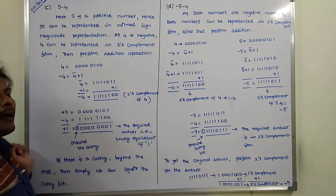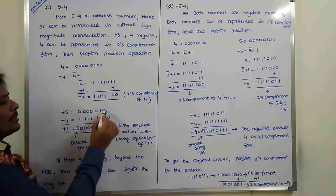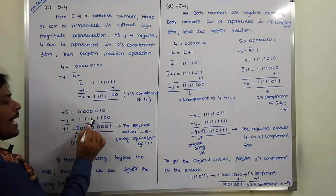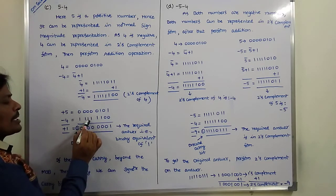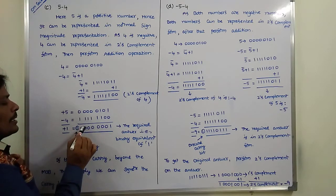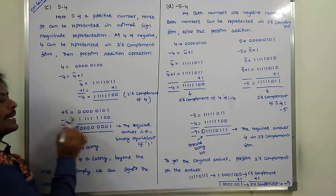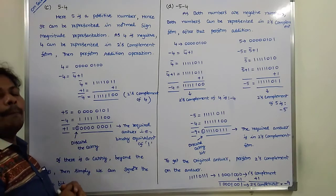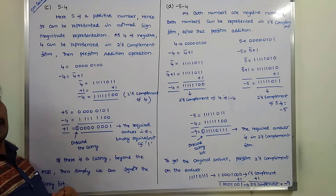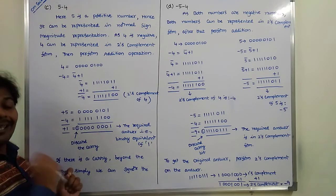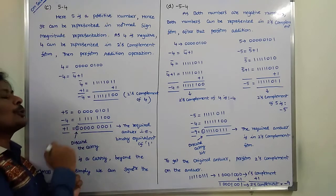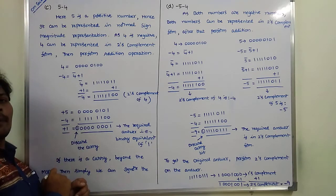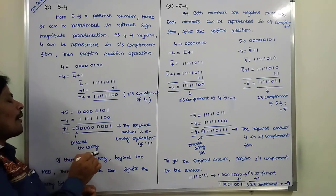Now we perform the addition operation. 1 plus 0 is 1; 0 plus 0 is 0; 1 plus 1 is 0 with carry 1; 1 plus 1 is 0 with carry 1; 1 plus 1 is 0 with carry 1. A carry bit is generated beyond the MSB bit. In binary addition, if any carry bit is generated beyond the MSB position, we must discard the carry bit. This is the carry bit that occurred beyond the MSB bit, so we discard it.